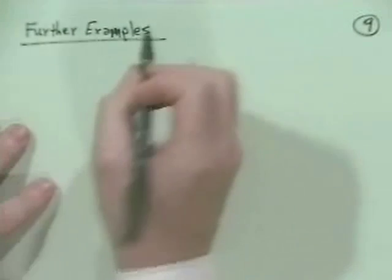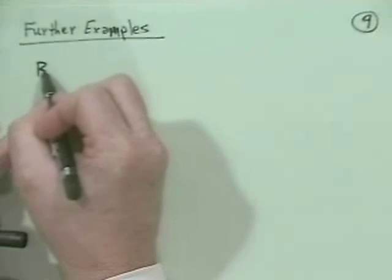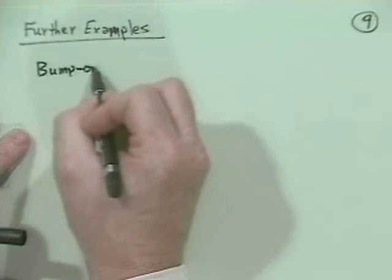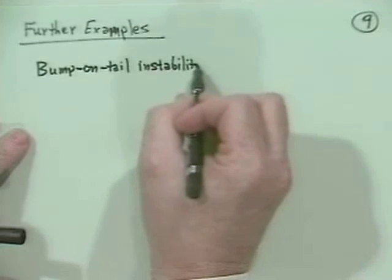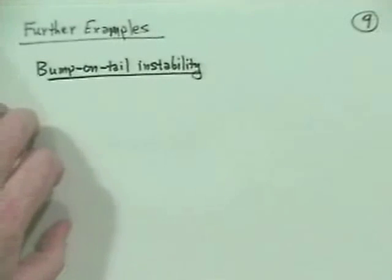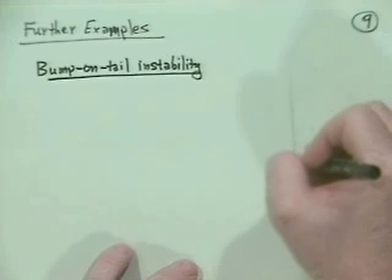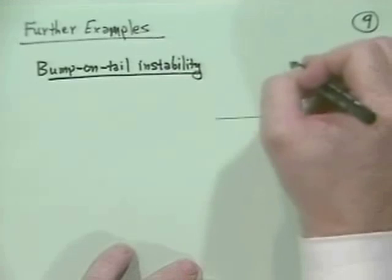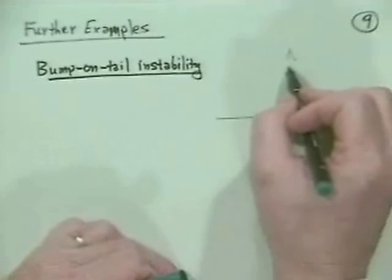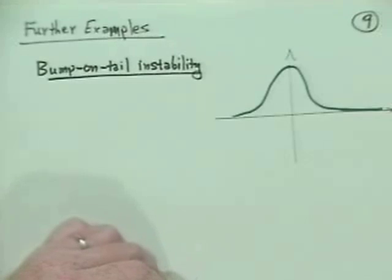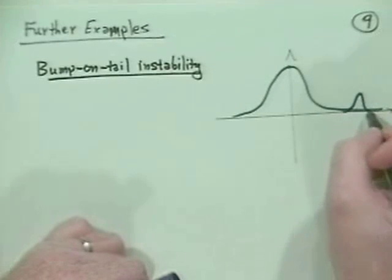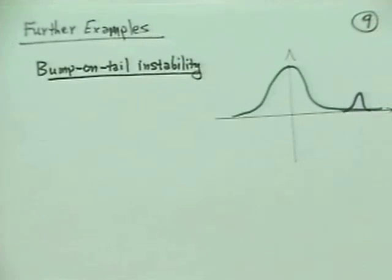I won't go through too much of the mathematics. The first one I want to talk about is the so-called bump-on-tail instability, sometimes called a beam plasma instability. The idea is that you imagine a distribution function with a usual sort of Maxwellian background distribution, but then way out on the tail you introduce a little bump — a beam or something like that — that has some finite thermal spread.